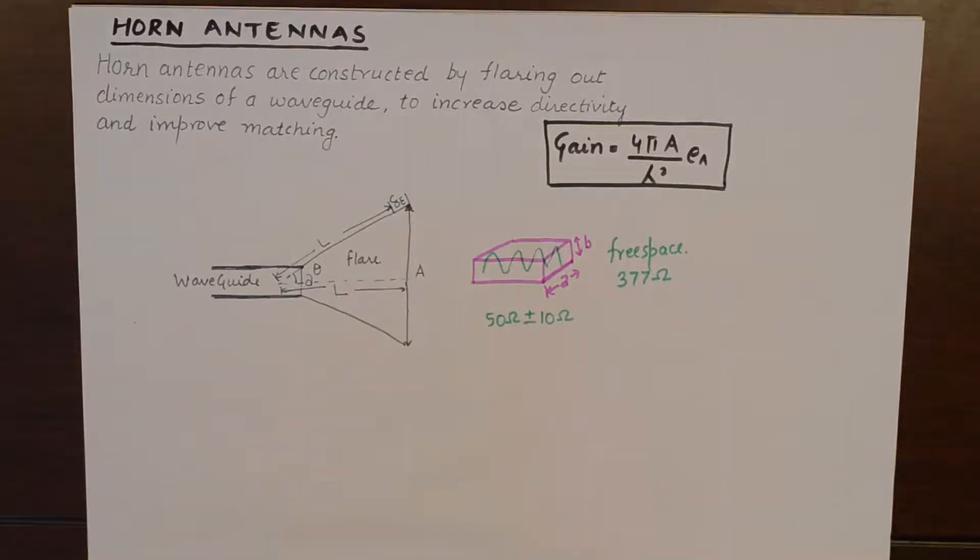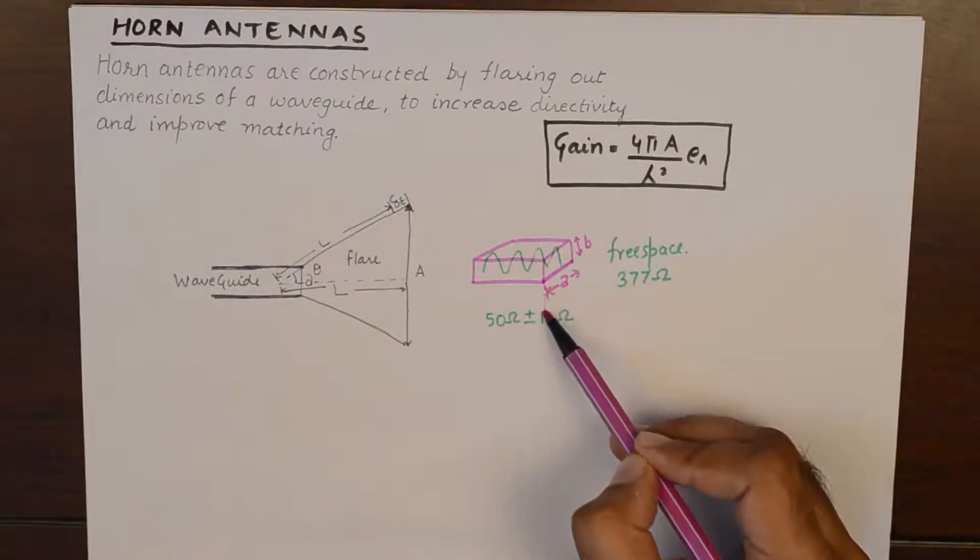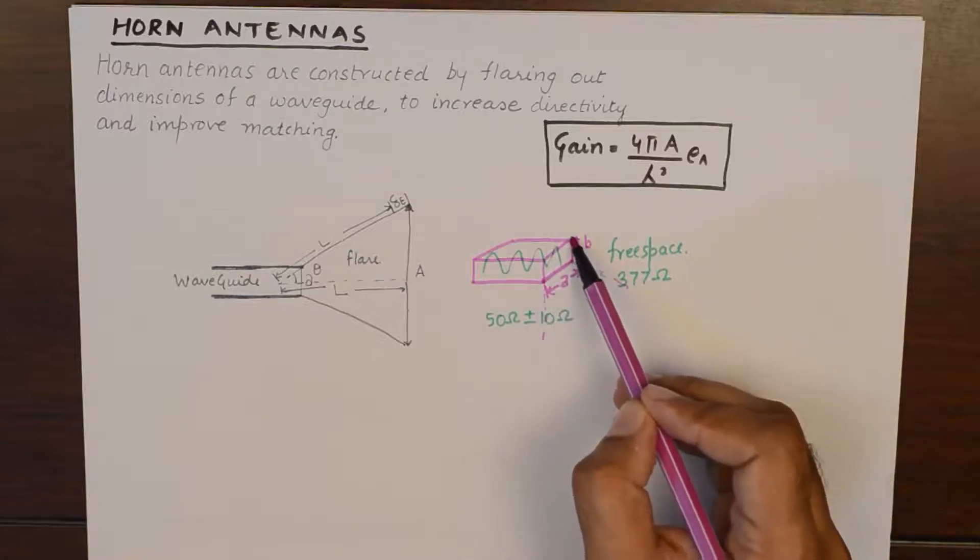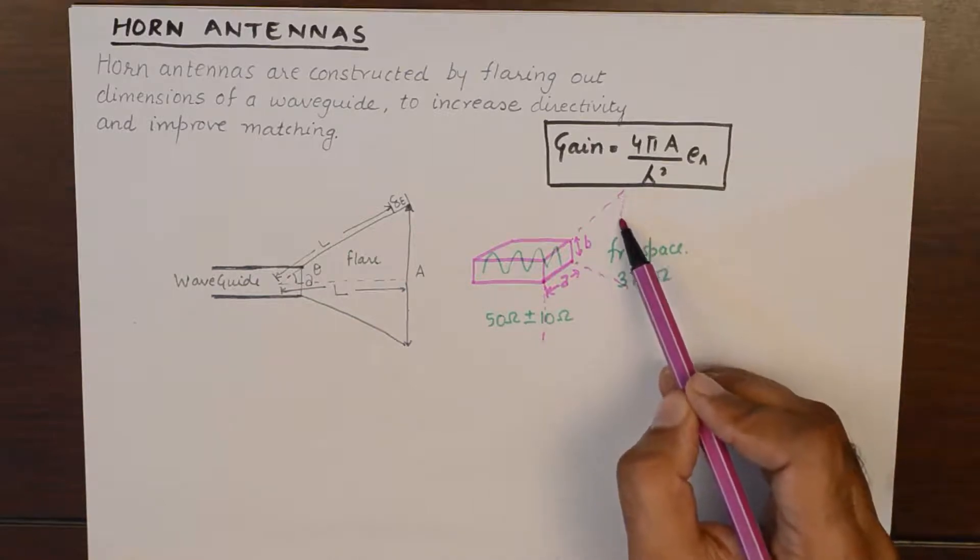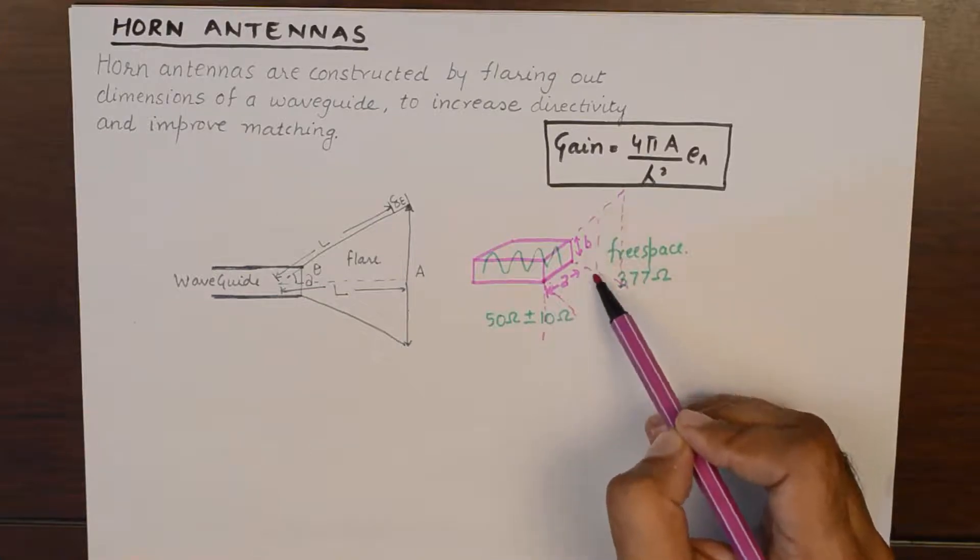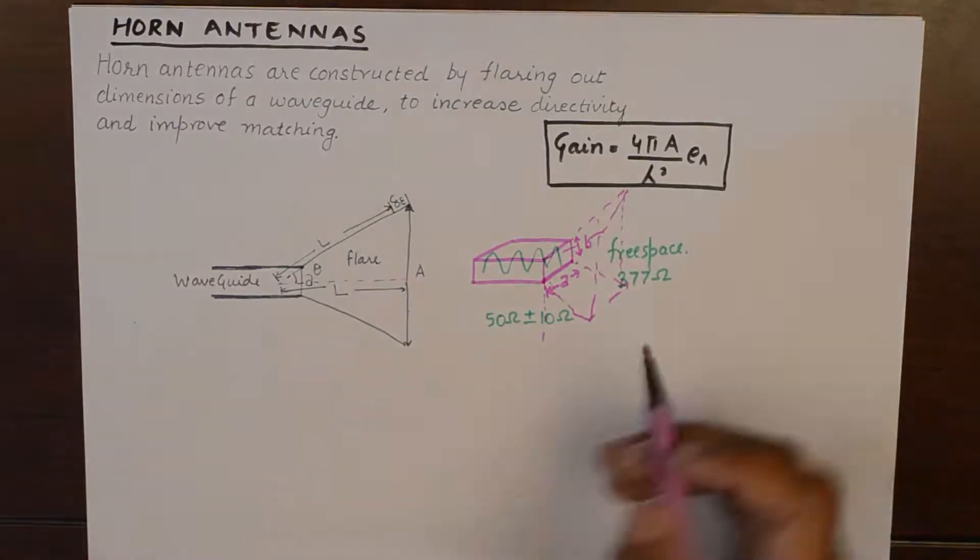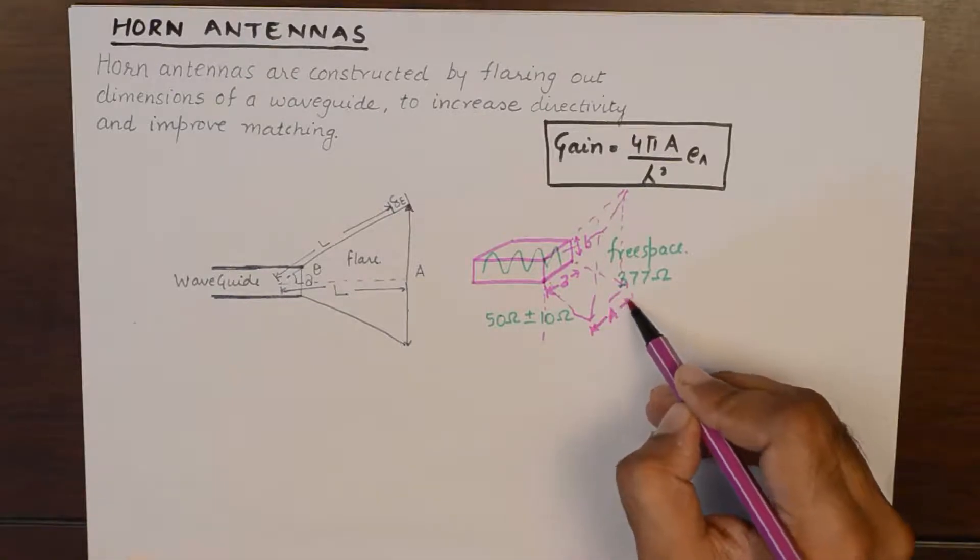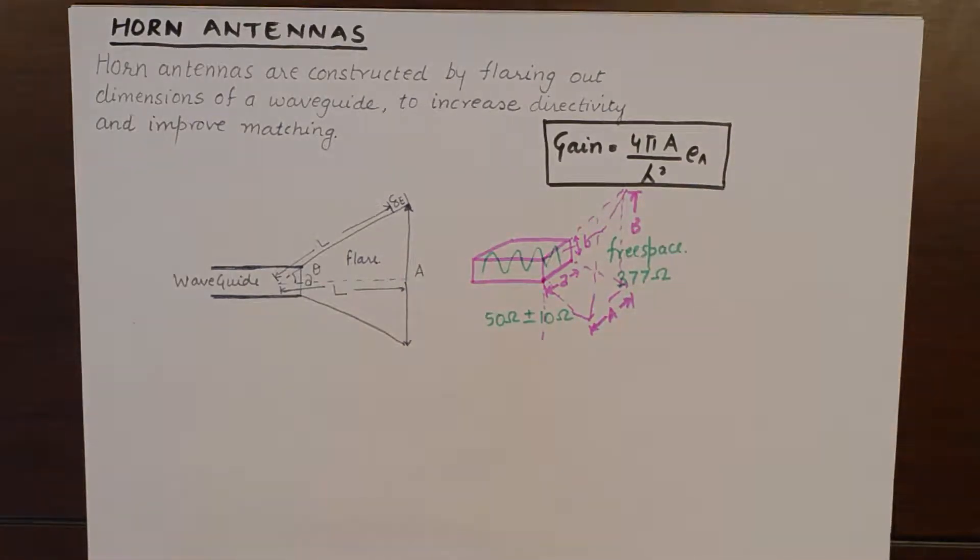So what is the solution? What we do is, we gradually increase the dimensions of a waveguide. What we intend to do is, we intend to increase this A gradually. And we intend to increase this B also gradually, thereby resulting in a horn like structure which has enhanced A which can be called as capital A now and enhanced B, which can be the superlative of the height of a waveguide.